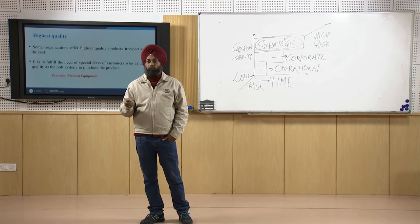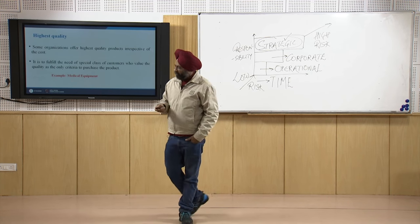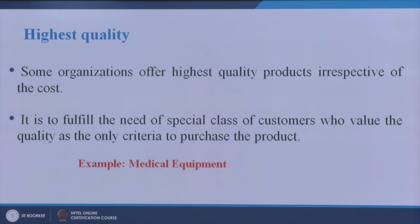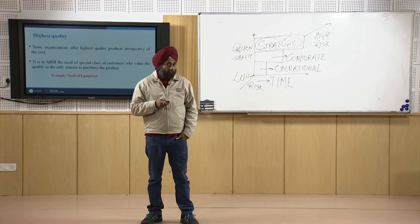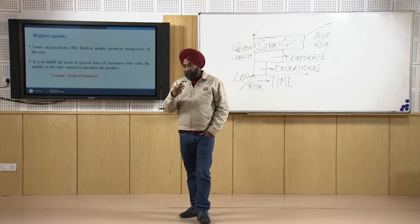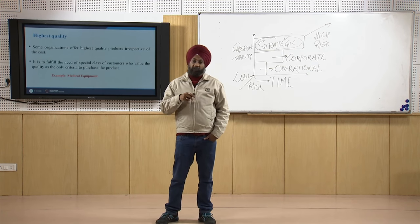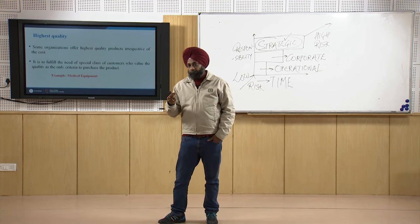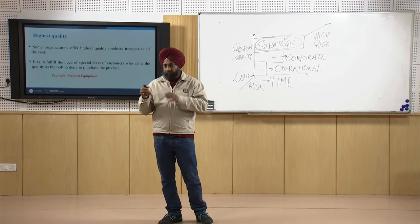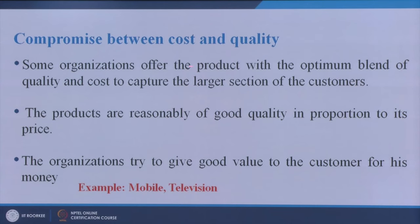One industry where quality is paramount is the aircraft industry — cost is never the primary criteria because human life is involved. Aeroplanes carry many passengers, so you cannot compromise on the quality of any part that goes into aircraft manufacturing. Similarly, medical equipment also requires top-class quality since human life is involved there too.